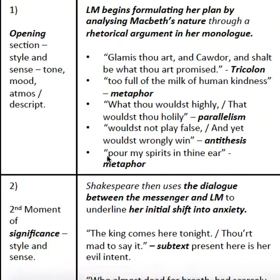So let's have a look at an example. In this opening section, Lady Macbeth begins formulating her plan by analysing Macbeth's nature through a rhetorical argument in her monologue. What you've got there is the sense first — Lady Macbeth is formulating her plan by analysing Macbeth's nature. That is the meaning, what is happening in an important way in the opening section of this section from the play.